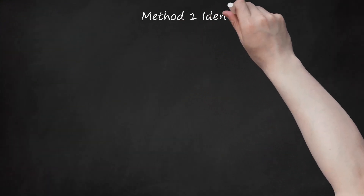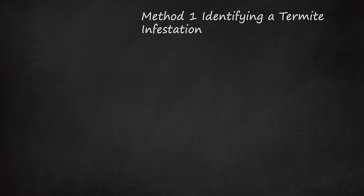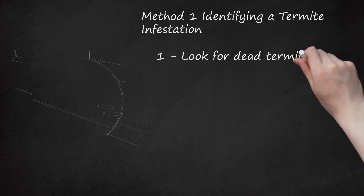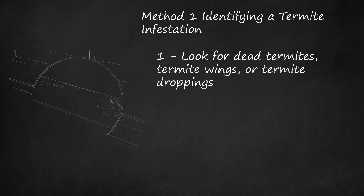Method 1: Identifying a Termite Infestation. Step 1: Look for dead termites, termite wings, or termite droppings. These signs are a dead giveaway that you have a termite infestation. Termites are similar in appearance to winged ants. Unlike ants, however, termites often shed their wings.